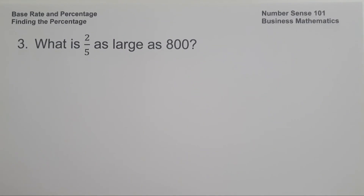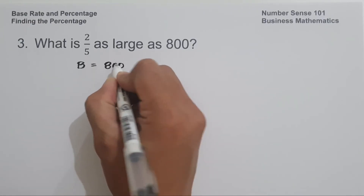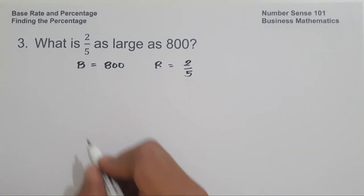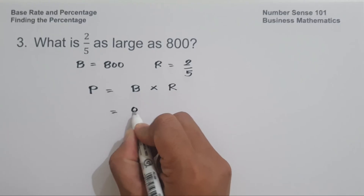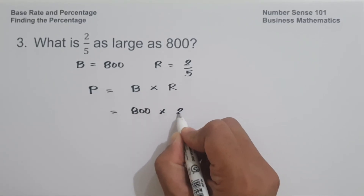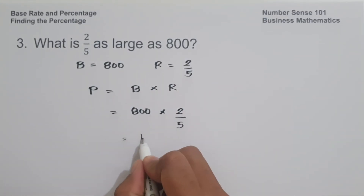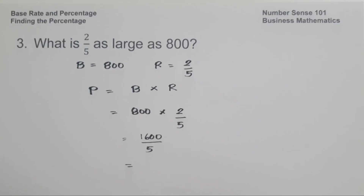On example number three: What is 2 over 5 as large as 800? To determine the value, the base is 800 and the rate is 2/5. Using the formula P = B × R, we get 800 multiplied by 2/5. That is 800 times 2 equals 1,600, divided by 5, which gives us 320.